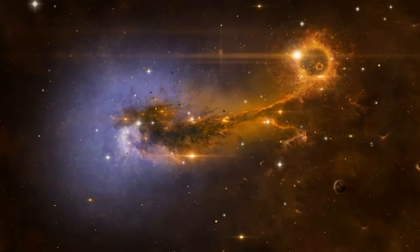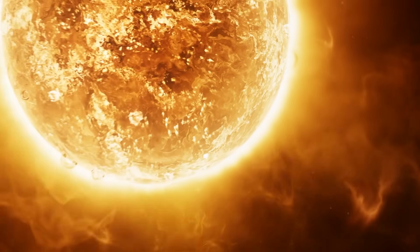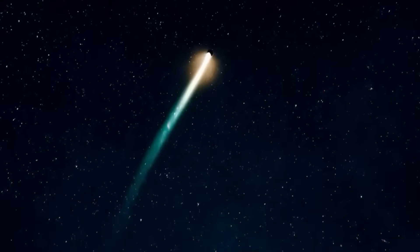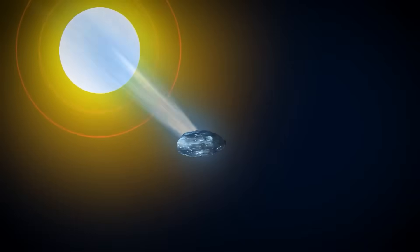This is where the mystery sharpens dramatically. The sunward-facing antitail observed after perihelion is not behaving like a classical dust structure. Its shape is stable, teardrop-like, and remarkably persistent, always pointing toward the sun.